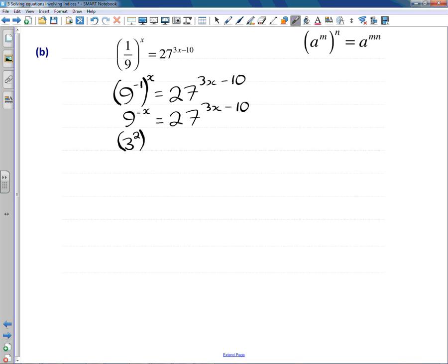So 9 we could capture as 3 raised to the power of 2, and put that in brackets.